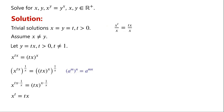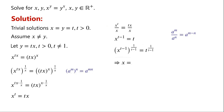Now divide the equation by x. We know that a^m over a^n equals a^(m minus n). By applying the quotient of powers rule, we have x to the power of t minus 1 equals t. Taking the (t minus 1)-th root on both sides, so we have x equals t to the power of 1 over (t minus 1).